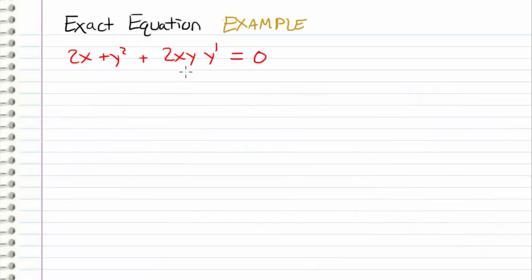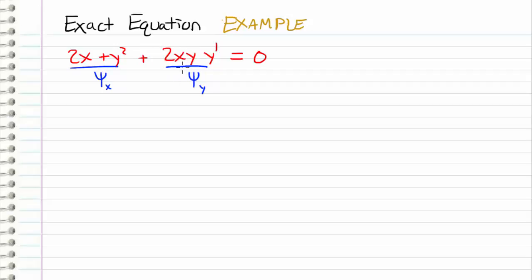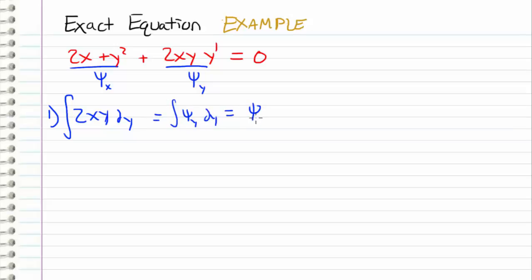Just for completeness, let's say we wanted to start with psi sub y instead of psi sub x. We can do the same four steps, except we start with psi sub y. We've already verified this is an exact equation, so 2xy represents the partial derivative of our unknown function psi with respect to y. Let's take 2xy — our psi sub y — and integrate it with respect to y. Integrating psi sub y with respect to y gives us psi.